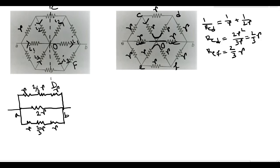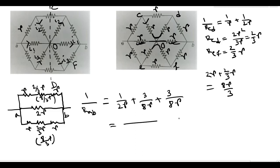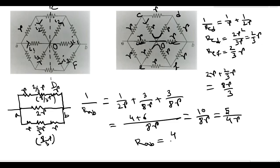The equivalent of r + 2r/3 + r equals 2r + 2r/3 = 8r/3. So the two outer paths each give 8r/3, and these three resistances — 2r, 8r/3, and 8r/3 — are in parallel. So 1/R_AB = 1/2r + 3/8r + 3/8r. The LCM is 8r, giving (4 + 3 + 3)/8r = 10/8r = 5/4r. Therefore R_AB = 4r/5. The equivalent resistance between points A and B is 4r/5.